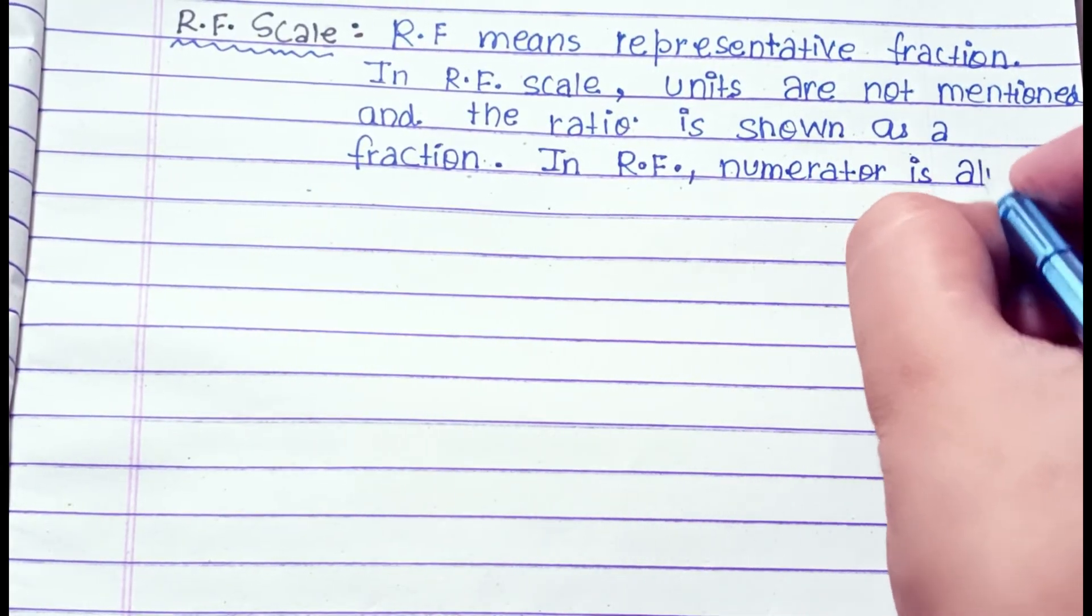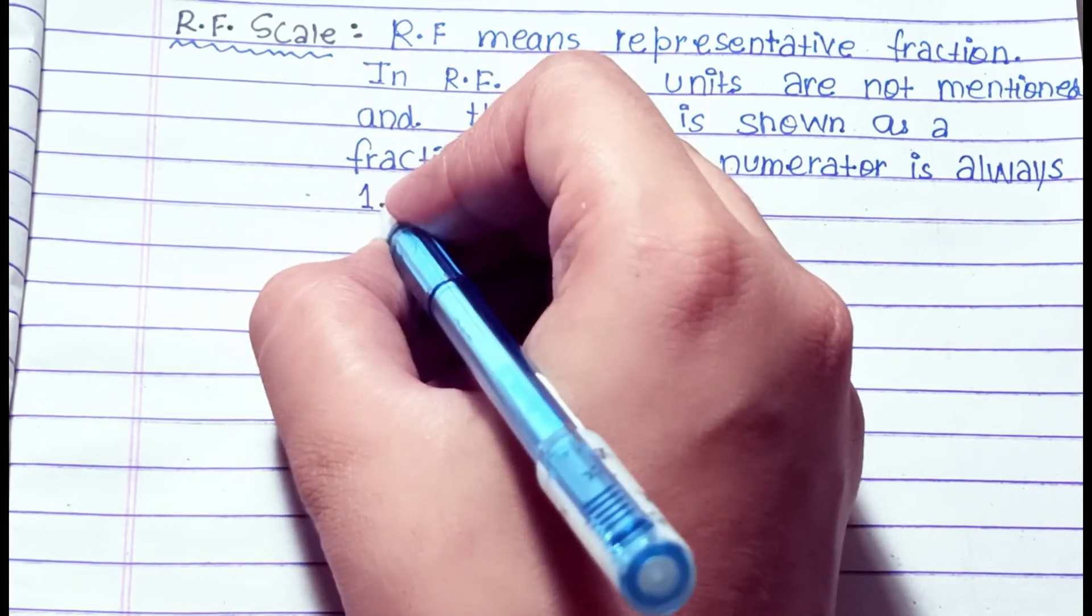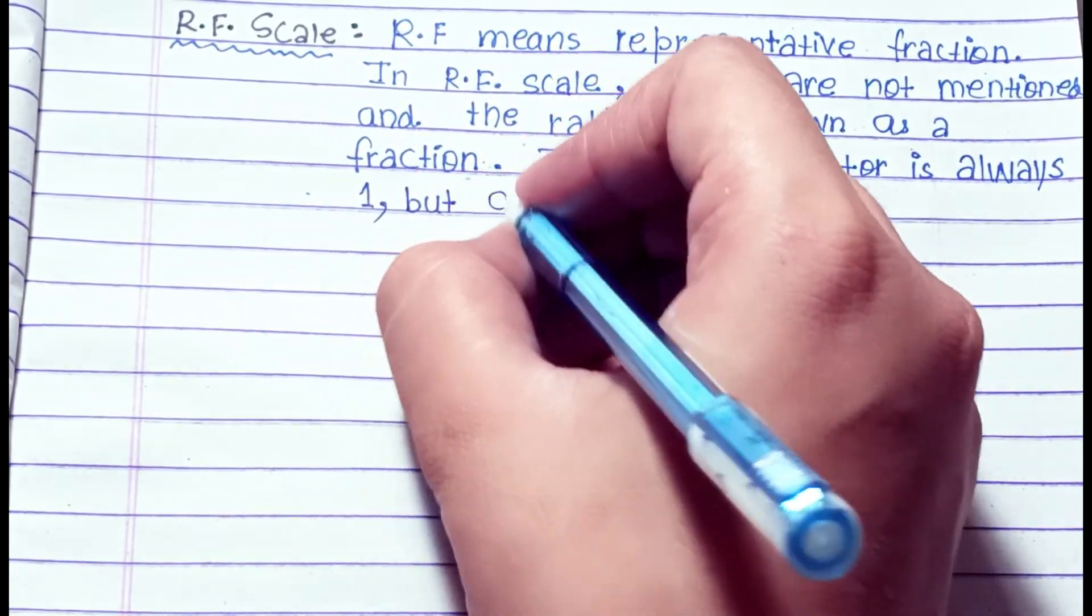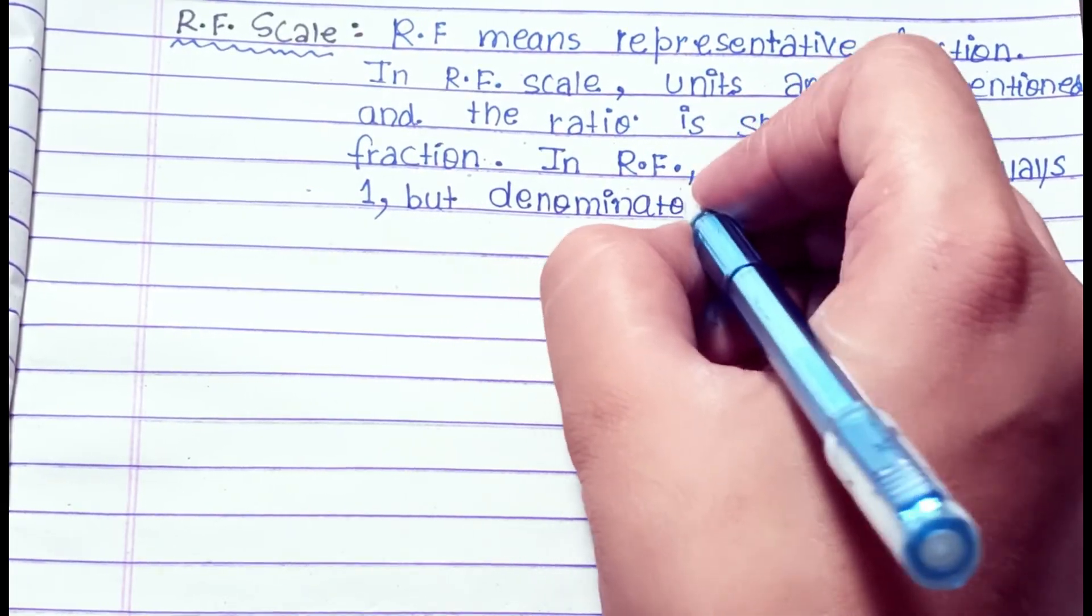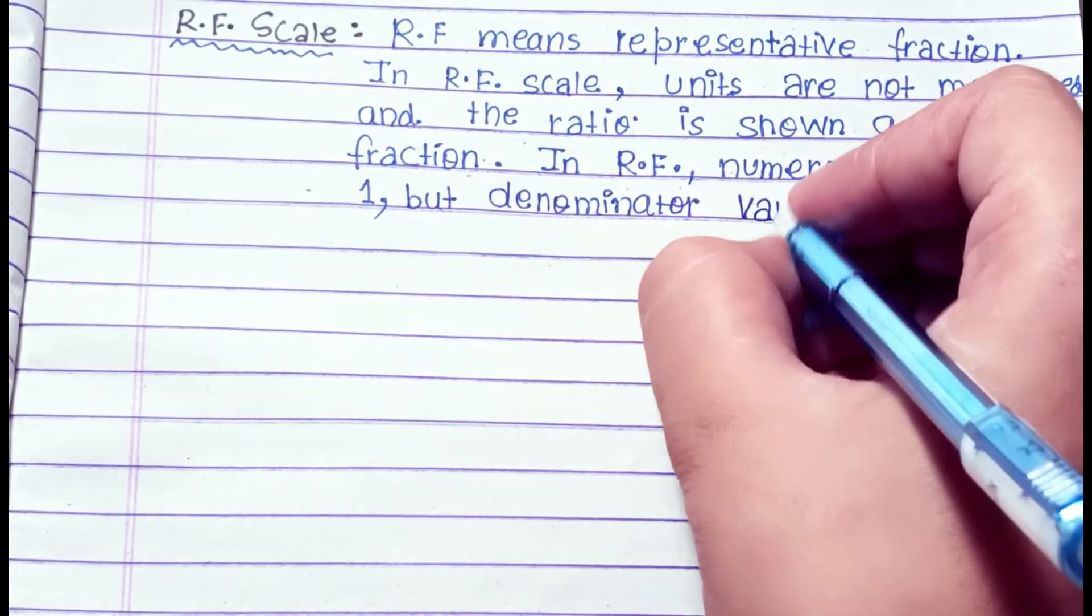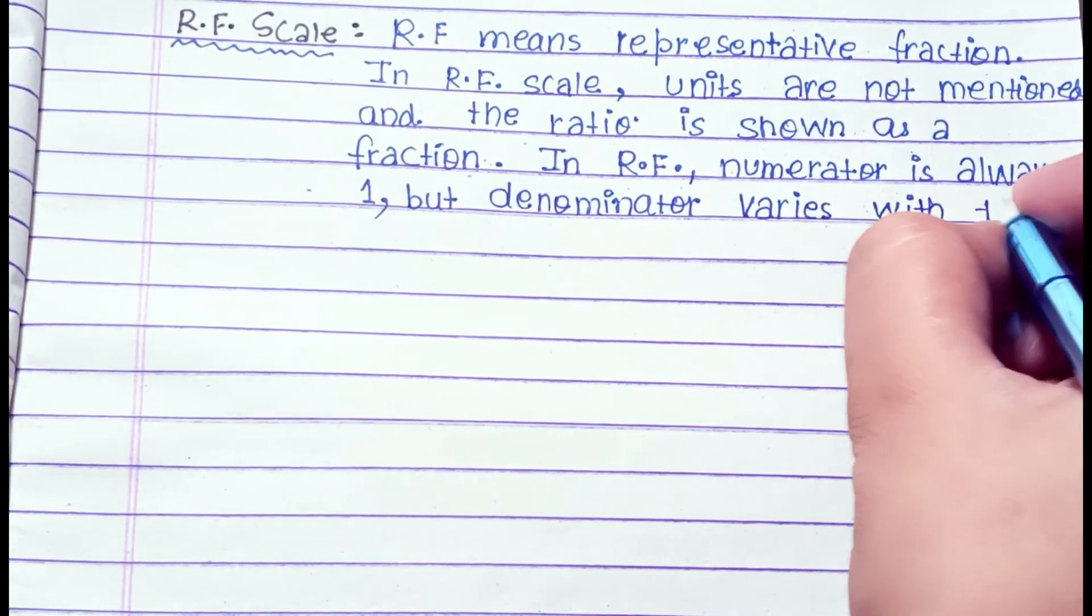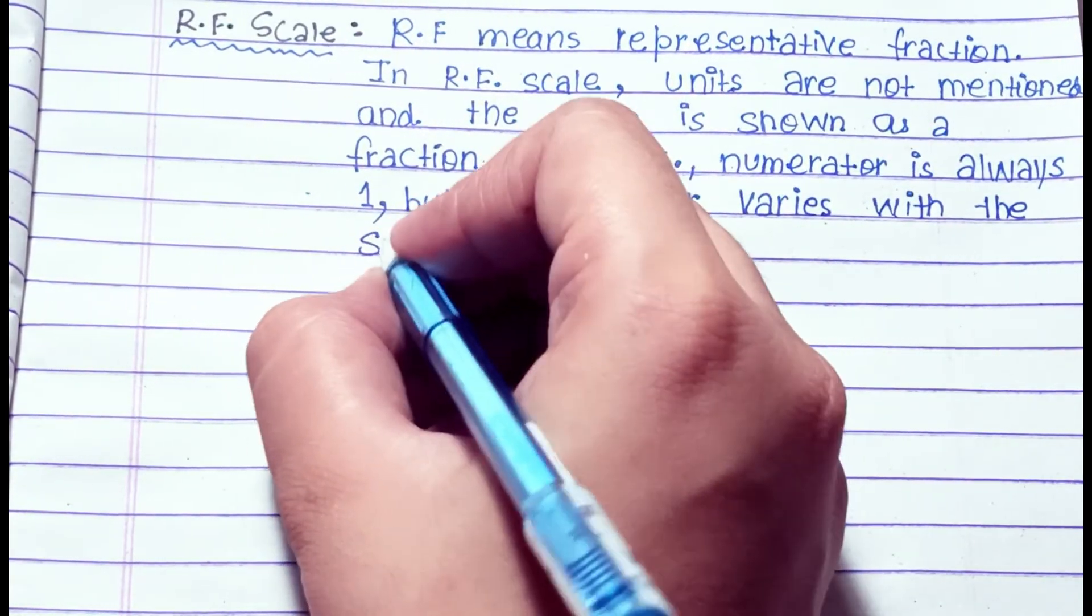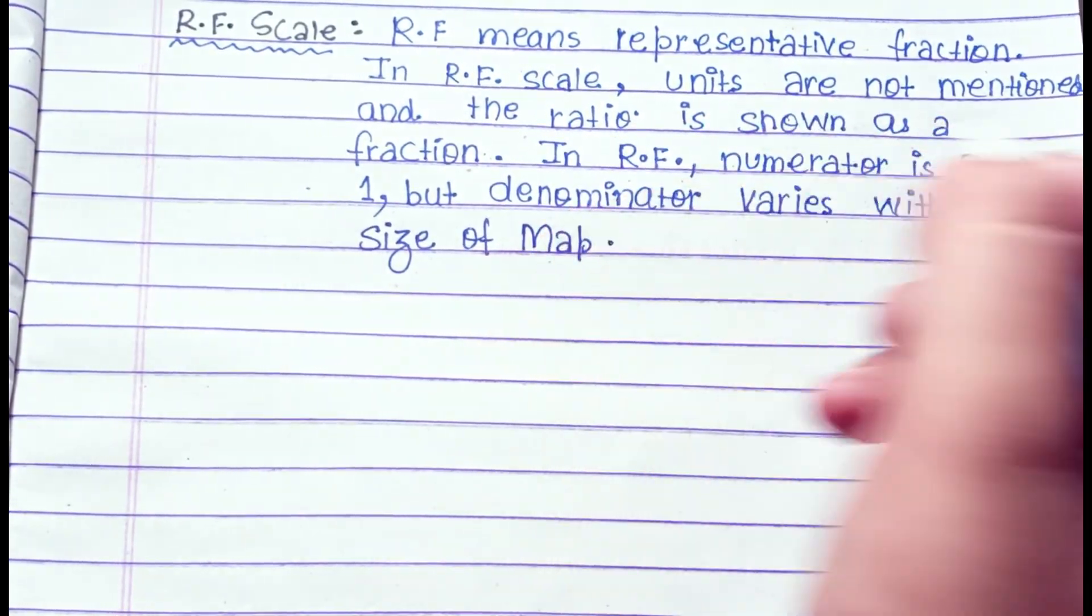RF scale: RF means representative fraction. In RF scale, units are not mentioned and their ratio is shown as a fraction. In RF, numerator is always one but the denominator varies with the size of the map.